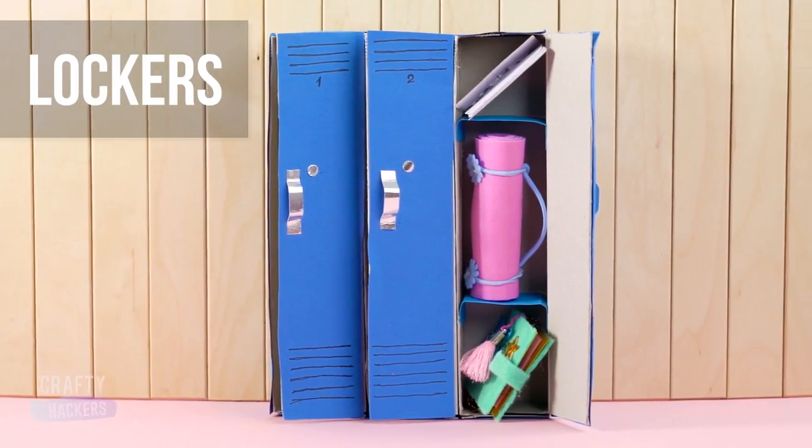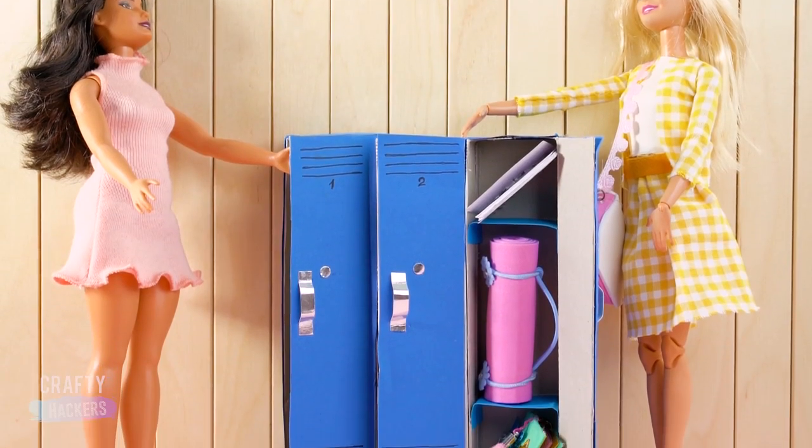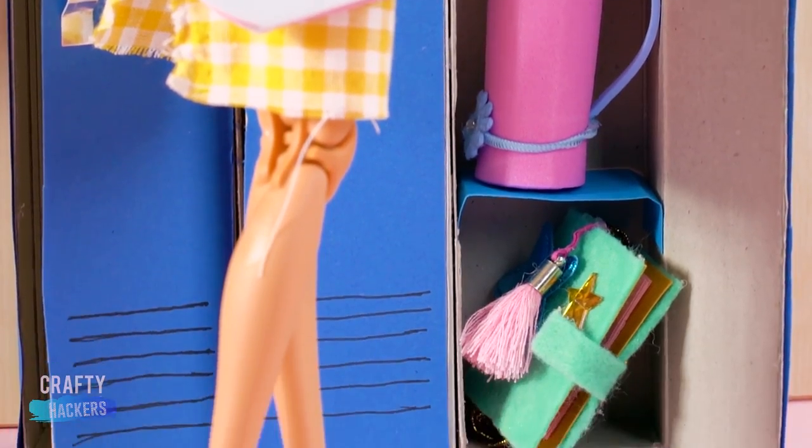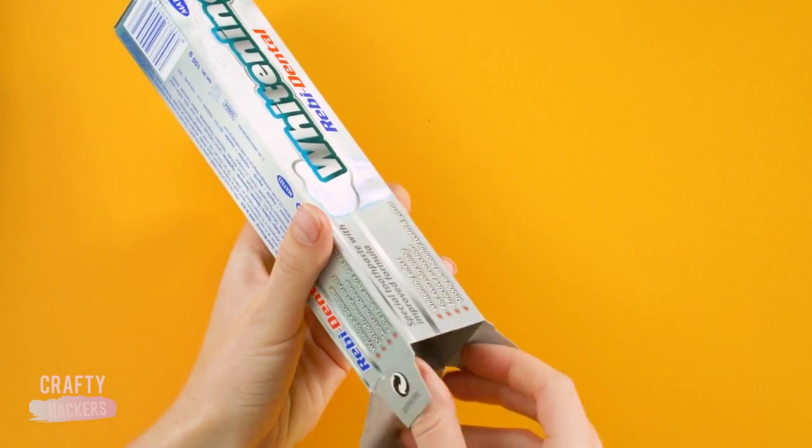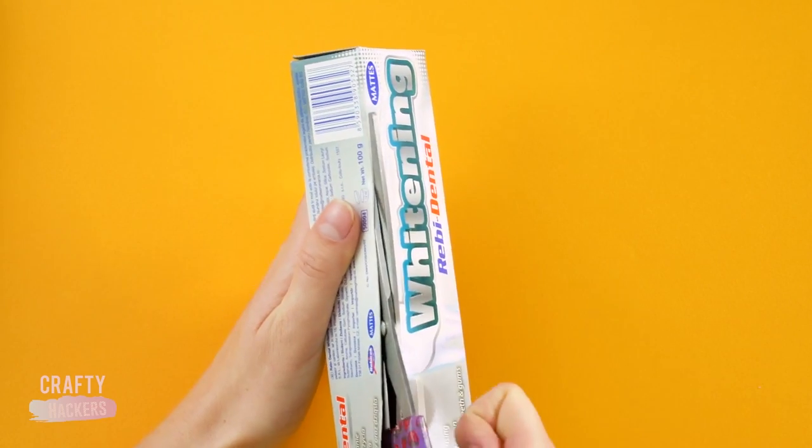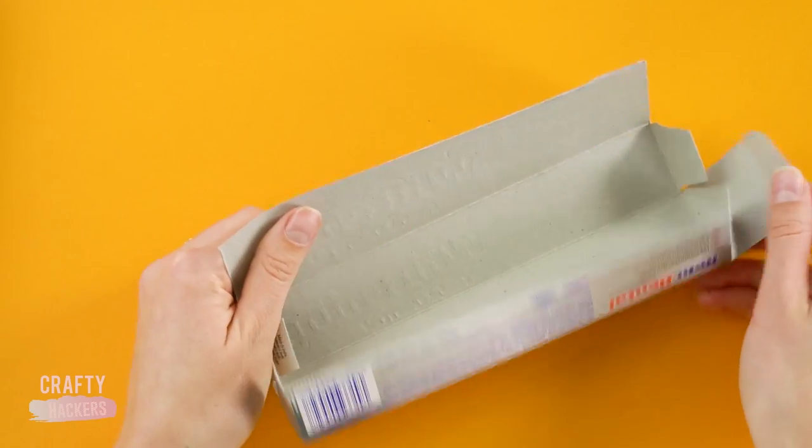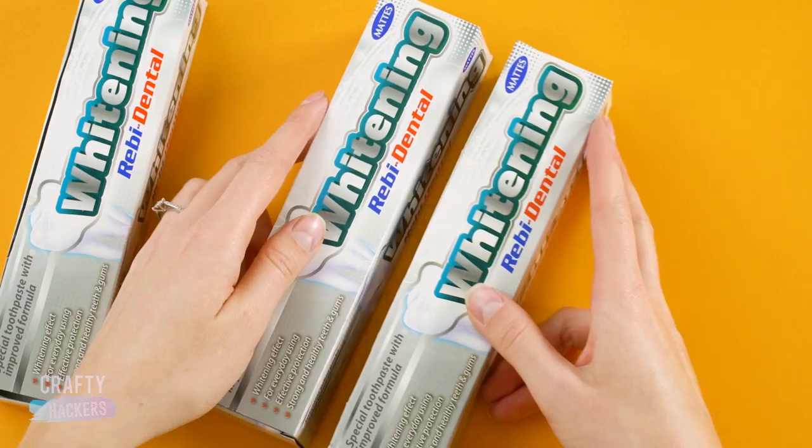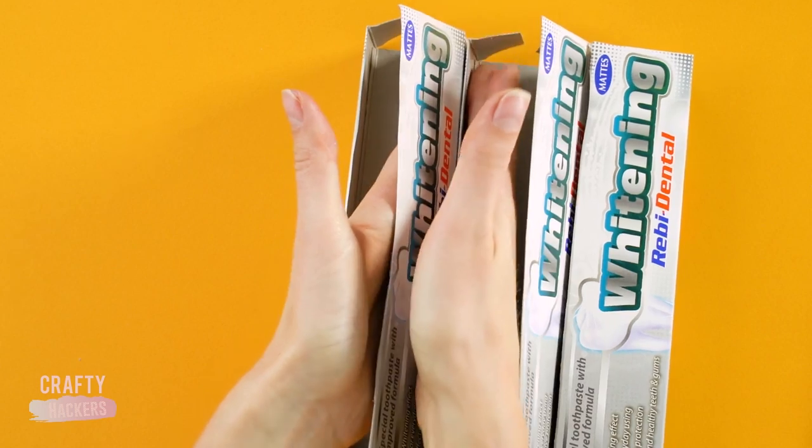Lockers. If you've got a few old toothpaste boxes, we'll show you how to make lockers for Barbie and her classmates. First, cut along the corner of the box and cut off the top flap. Now glue the boxes together to make lockers. Make sure the boxes all open out in the same direction.